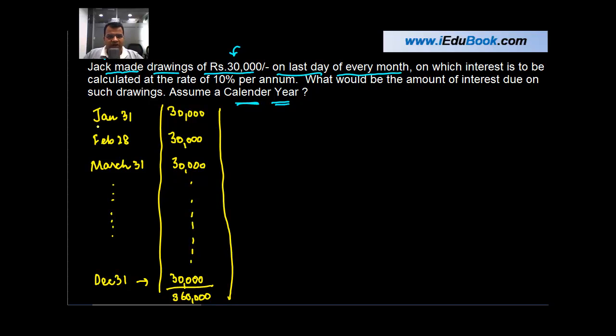If you were given only one of these drawings, what would you do? You would see what is the period for which you've used this. For example, January 31 is when you made the drawing, and the year ends on December 31. The period you have used these drawings is January 31 until December 31, or 11 months.